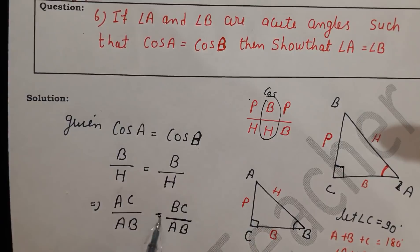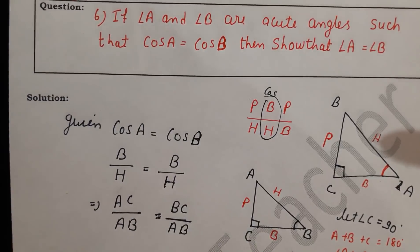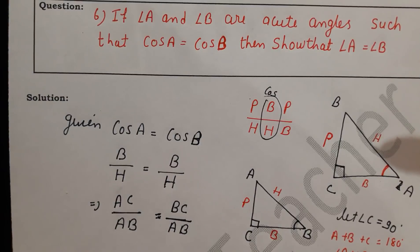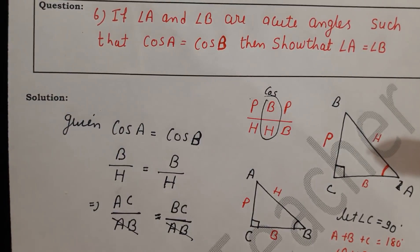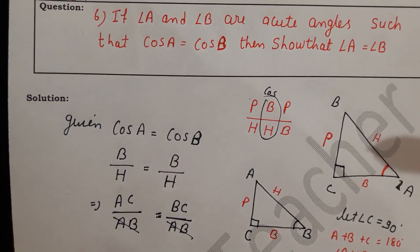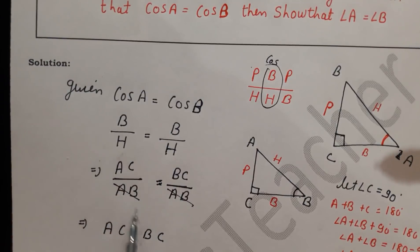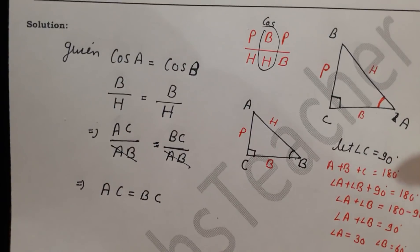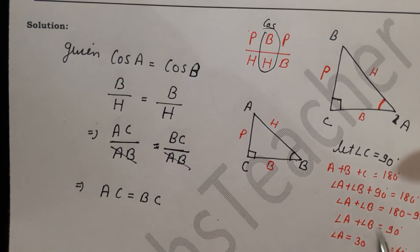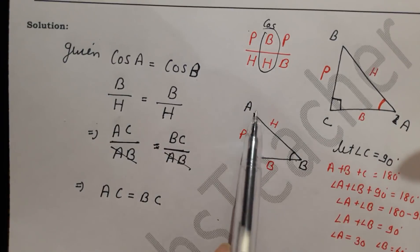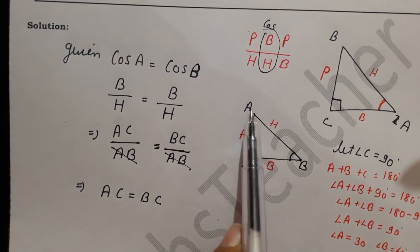Now since cos A equals cos B, we have AC over AB equals BC over AB. Both denominators are AB, so they cancel. This gives us AC equals BC. So the two sides AC and BC are equal to each other.